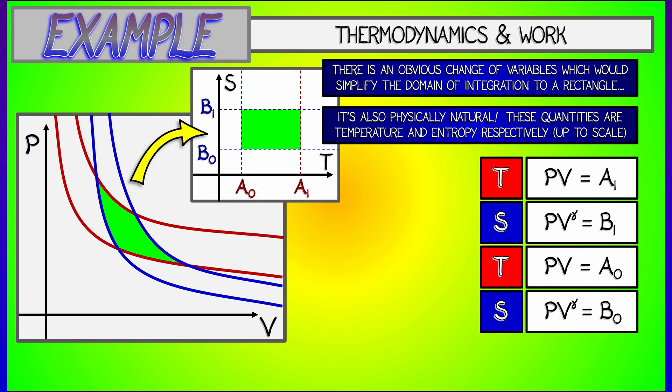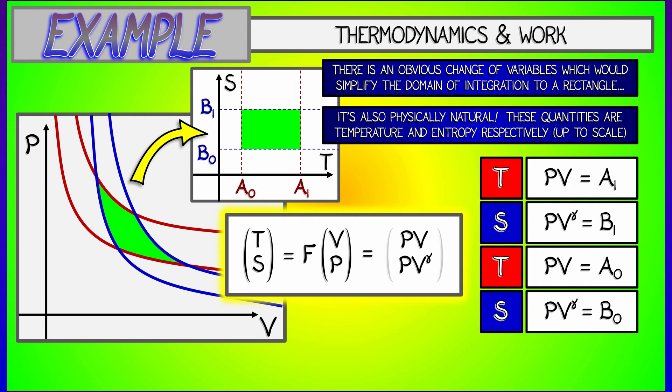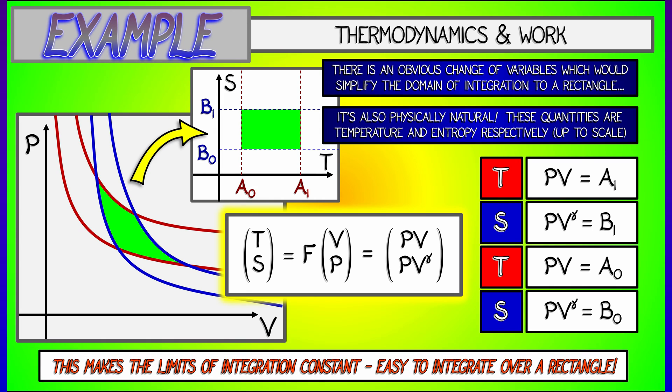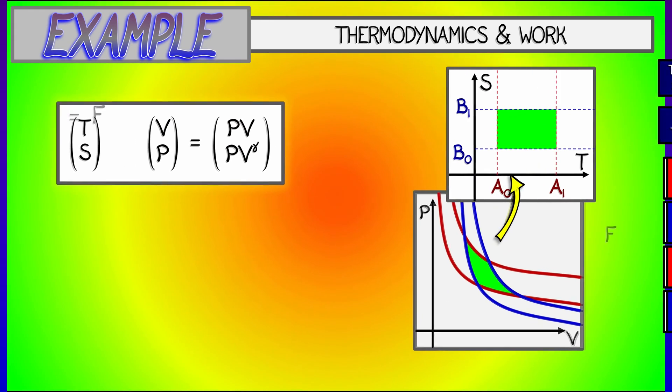Okay, so we have our coordinate transformation. T is P times V, S is P times V to the gamma. Now that we've got that in place, and our limits of integration are going to be nice, let's set up the actual integral. So, what do we do? For the change of variables theorem, I'm going to have to start taking some partial derivatives.